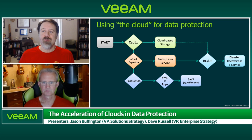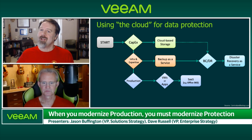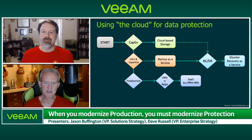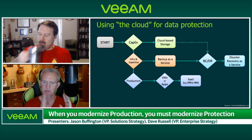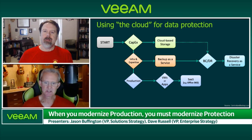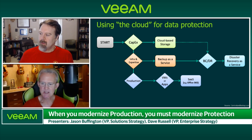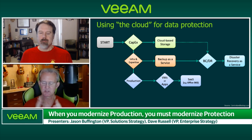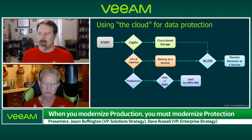If we talk about SaaS for a minute, the poster child for that is Office 365. Any time you modernize production, you have to modernize protection. Some organizations are in a lift-and-shift model, whereas some are outright saying 'Let's change the model entirely' — your example being moving from on-prem Exchange to O365. What kind of expenditure model do you want? Let's make sure we also take availability into account for that.